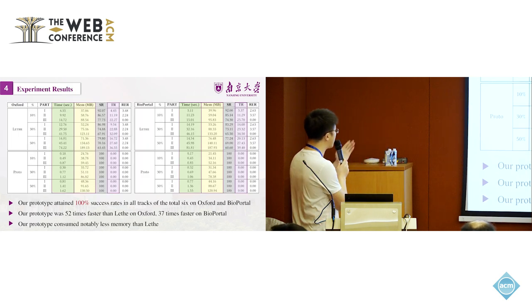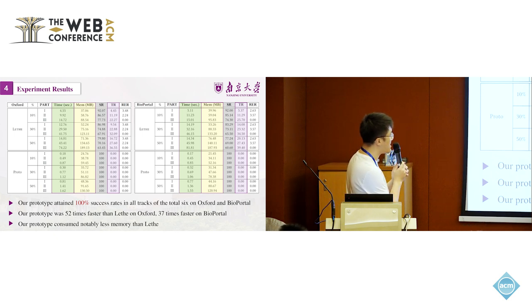These are the results. Proto is our method. Lethe is the method we compare it to. The first important column is the SR column, which denotes the success rate. You see, for our method, the success rate remains perfect score. 100% success rate, which is remarkable, I would say. Also, our prototype was 52 times faster than Lethe, the current state-of-the-art, on Oxford, and 37 times faster on BioPortal. Also for the memory consumption, you can see, for our method in this figure, is consistently lower than the figures of Lethe.